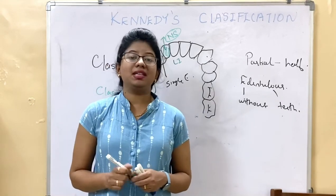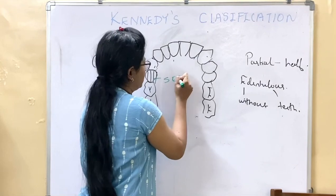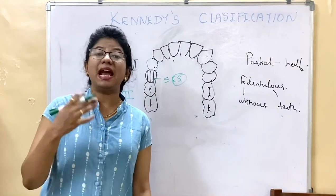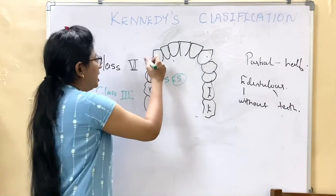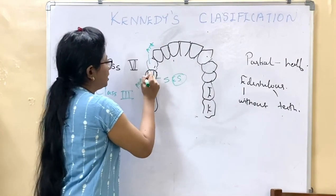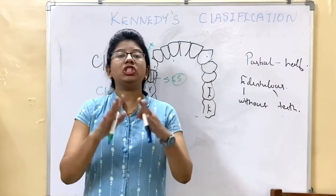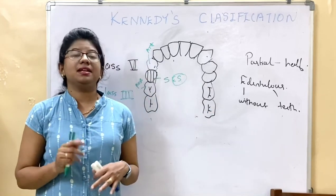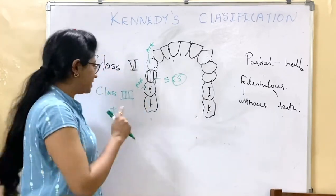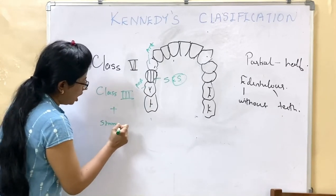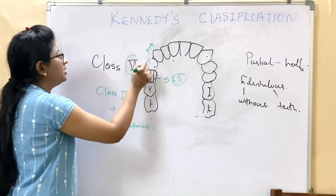Applegate added one more class — Class 6. In Class 6, there is a single edentulous space with teeth present anterior as well as posterior to it, again similar to Class 3. But here, both the anterior and posterior abutments are very strong for support — both are tooth-supported. All other classifications are tooth-tissue supported, but in Class 6 it is fully tooth-supported. That is why it is named as a different class: Class 3 plus strong abutments on both the anterior and posterior sides.